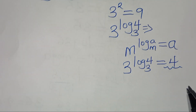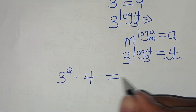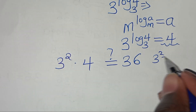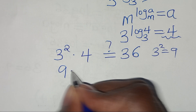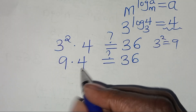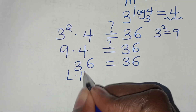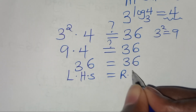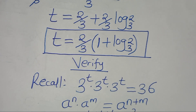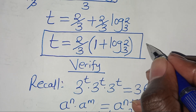Substituting, we have 3 squared times 4, which is supposed to give us 36. Now 3 squared equals 9, so we have 9 times 4, which equals 36. So the left-hand side equals the right-hand side, and this confirms that the value of t equal to 2 over 3 times the quantity 1 plus log 2 to base 3 satisfies the equation.